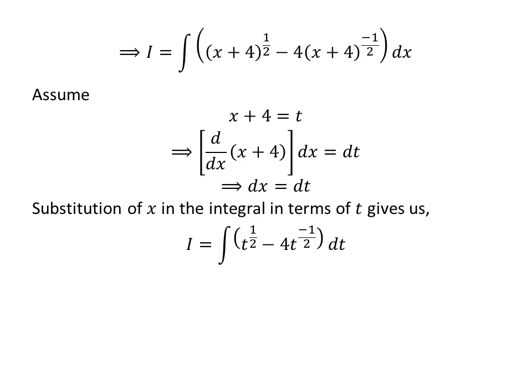In the integral i, let us substitute x plus 4 by our assumed value t and differential of x by differential of t. So we get i is equal to integral of t raised to the power of half minus 4 times t raised to the power of minus half with respect to t.